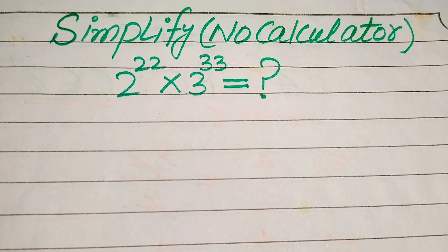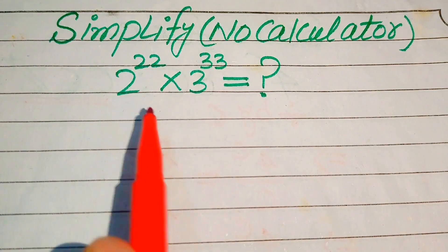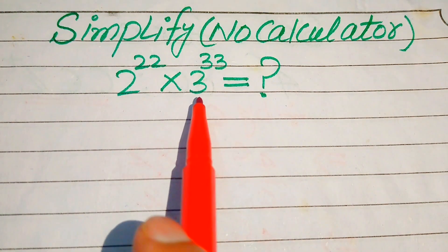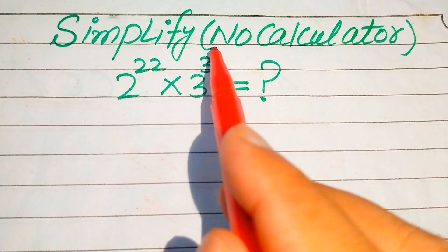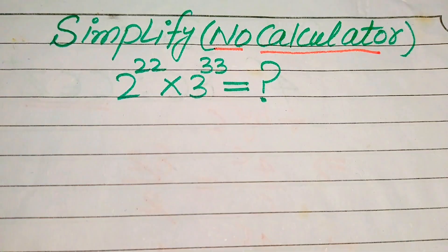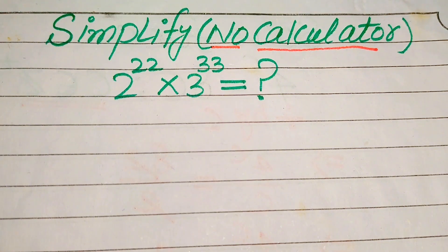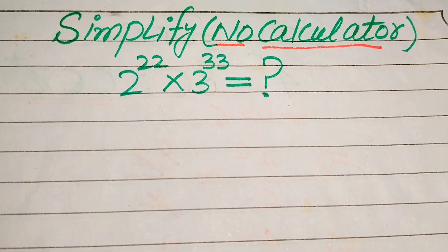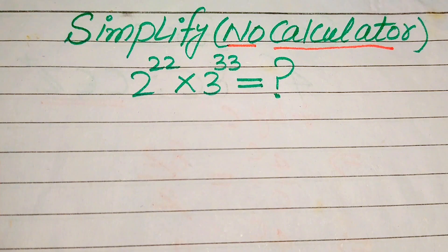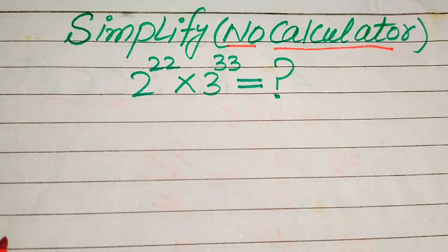Hello everyone. How to simplify this nice algebraic expression: 2 to the power of 22 multiplied by 3 to the power of 33. Here we need to write this algebraic expression in simplified form, but remember that a calculator is not allowed in this problem. This means we need to show all of the working on paper. We will solve this problem using two methods — please feel free to share any other method you have in the comment section.